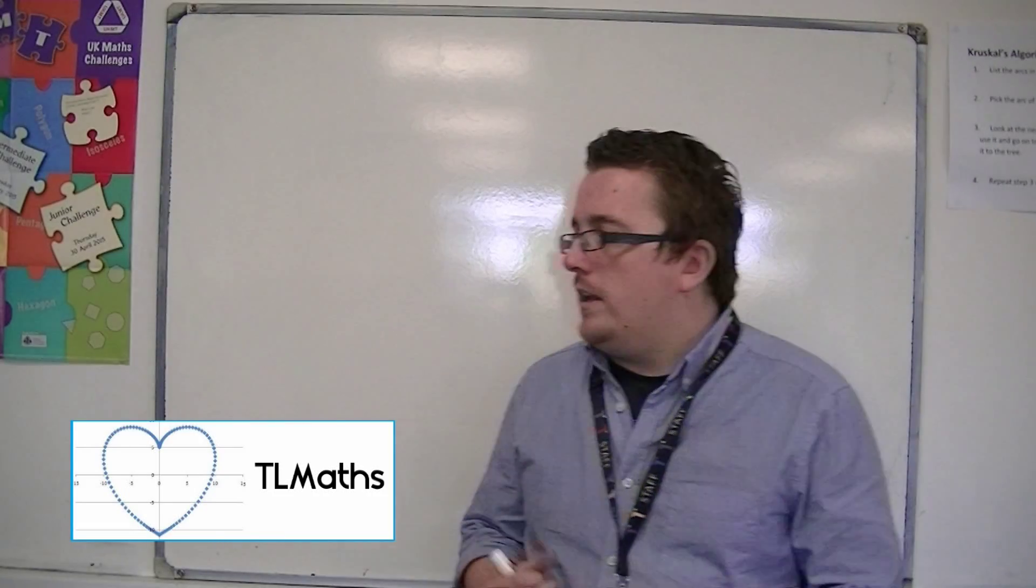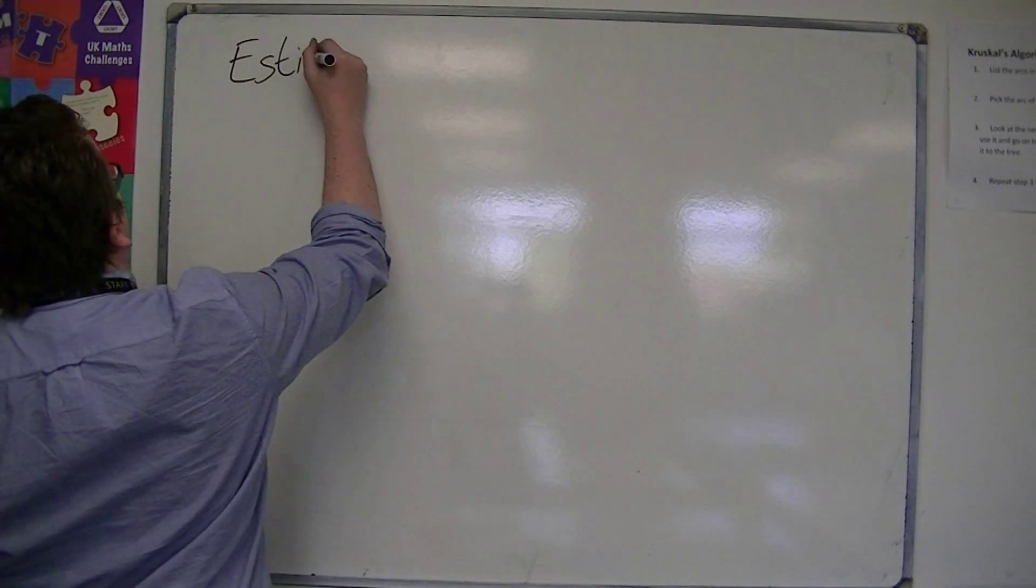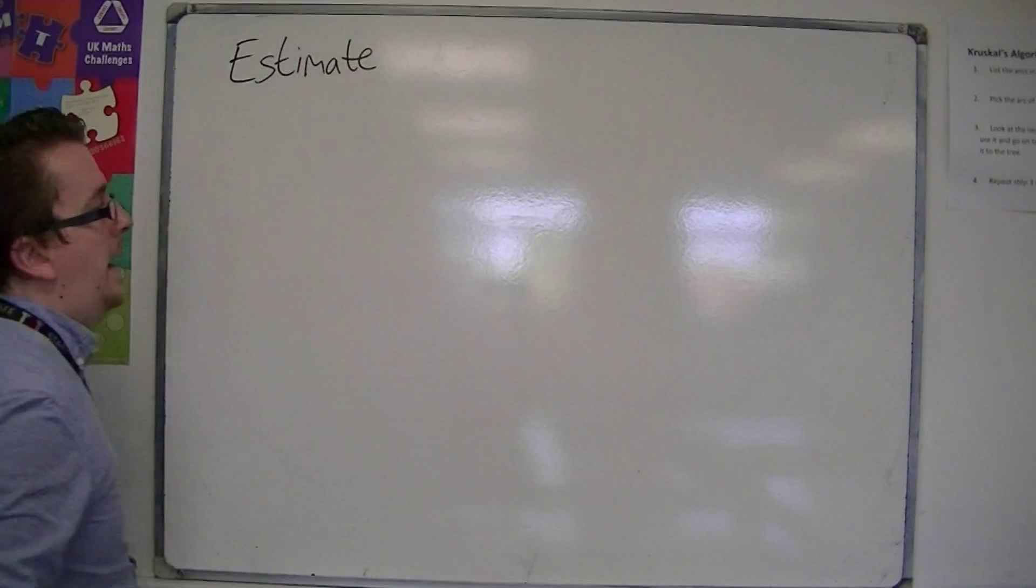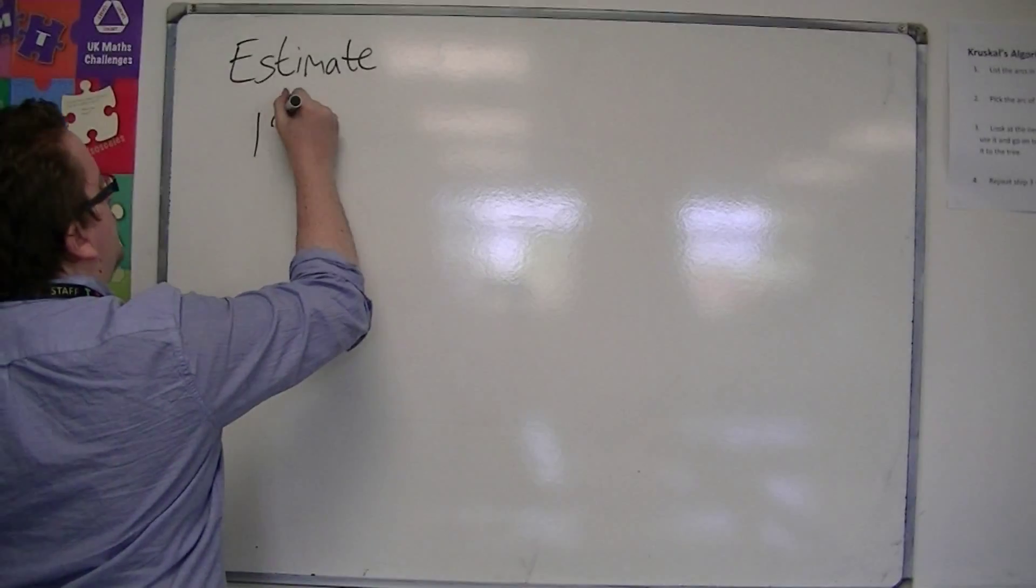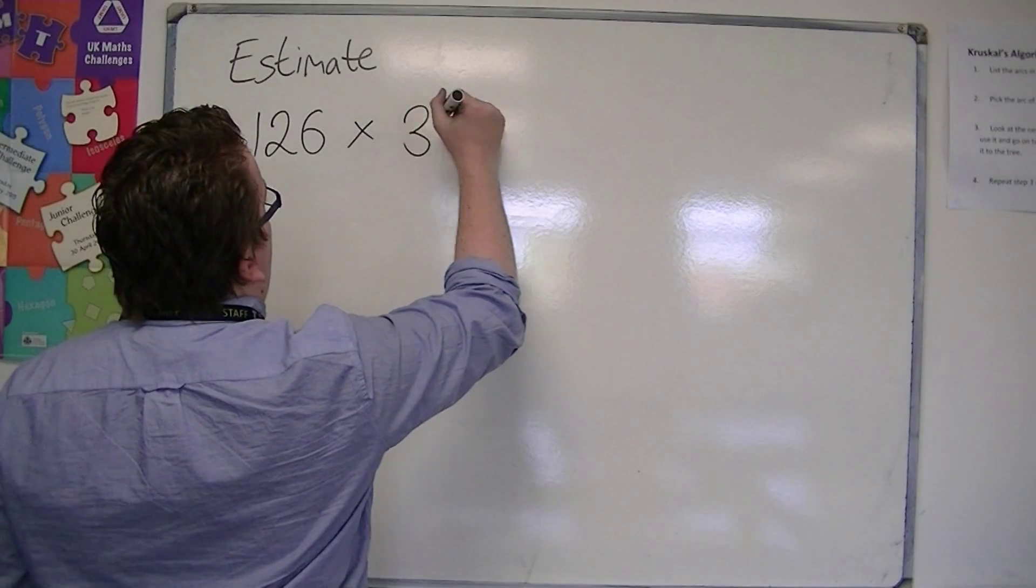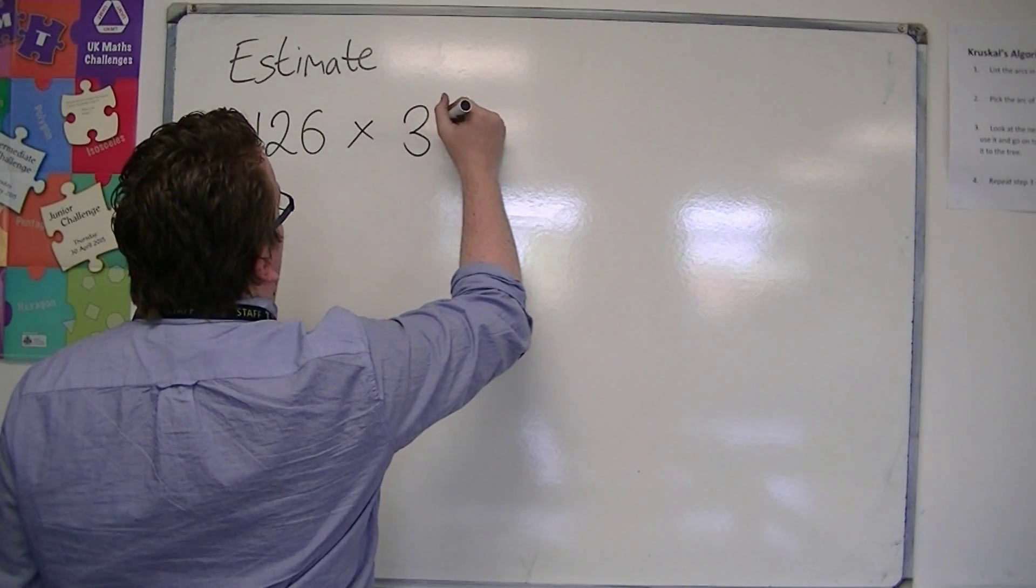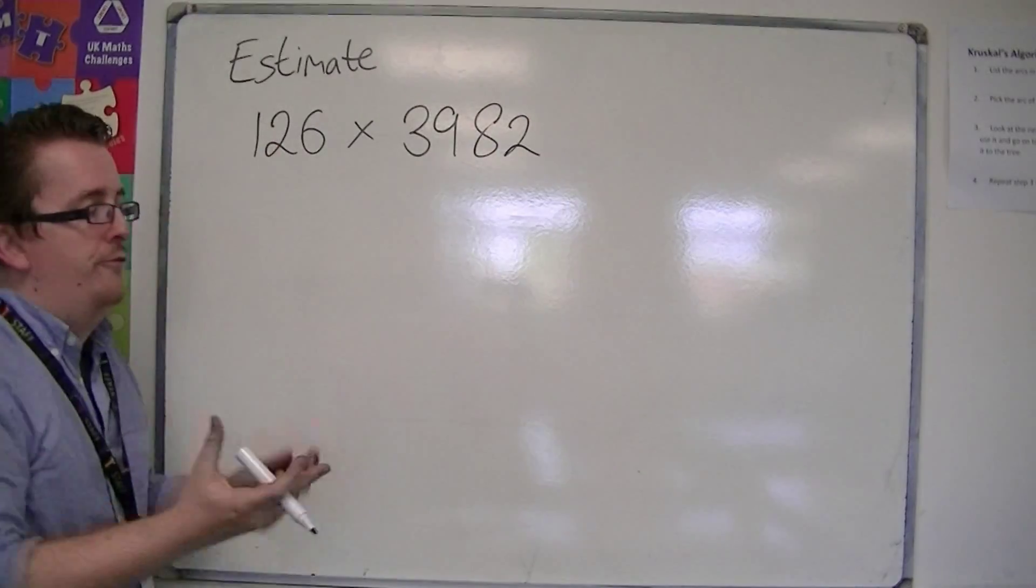Okay, so let's say we've been asked to estimate something like 126 times 3,982, for example.